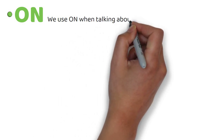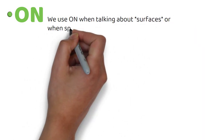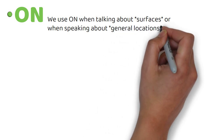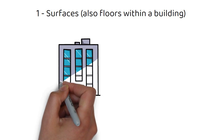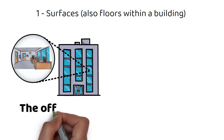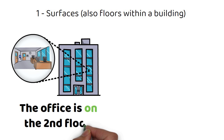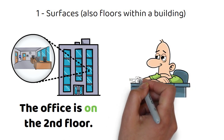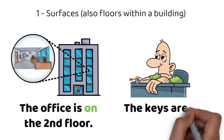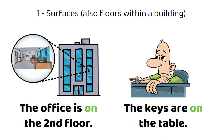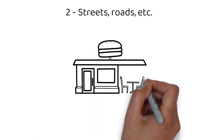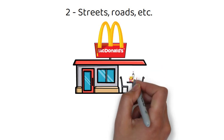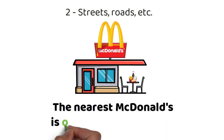We use on when talking about surfaces or when speaking about general locations. For example, the office is on the second floor. The keys are on the table.